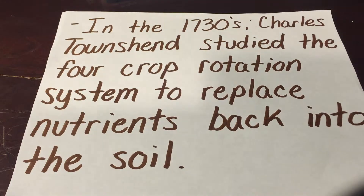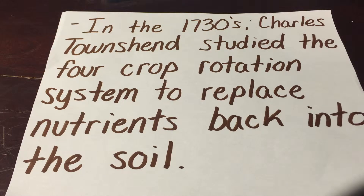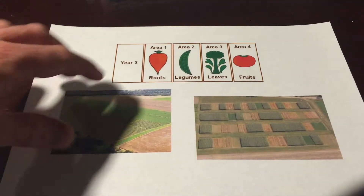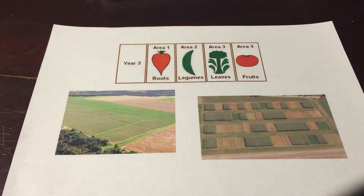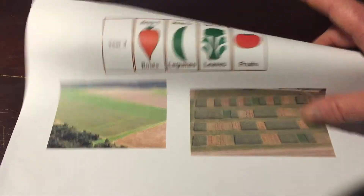In the 1730s, Charles Townshend studied the four-crop rotation system, which was used to replace nutrients back into the soil. He divided four fields into four different types of produce: wheat, clover, oats, and turnips. He found a much better yield doing this. Growing crops in the same place in a field over time decreases nutrient levels, but giving the land a rest puts nutrients back into the ground.